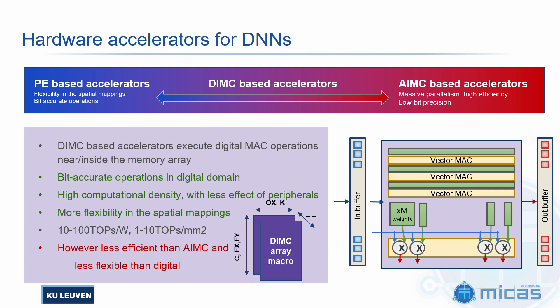We still suffer from the same data flow limitations that we have with AMC. However, in this case, we have less contribution from the overhead — the overhead is just the adder tree that has to accumulate the partial sums. DMC is a sort of middle ground between AMC and digital accelerators. It's less efficient than AMC, but it provides a little bit of flexibility in terms of the scheduling space. We can place multiple smaller macros next to each other to allow for higher utilization of the array.